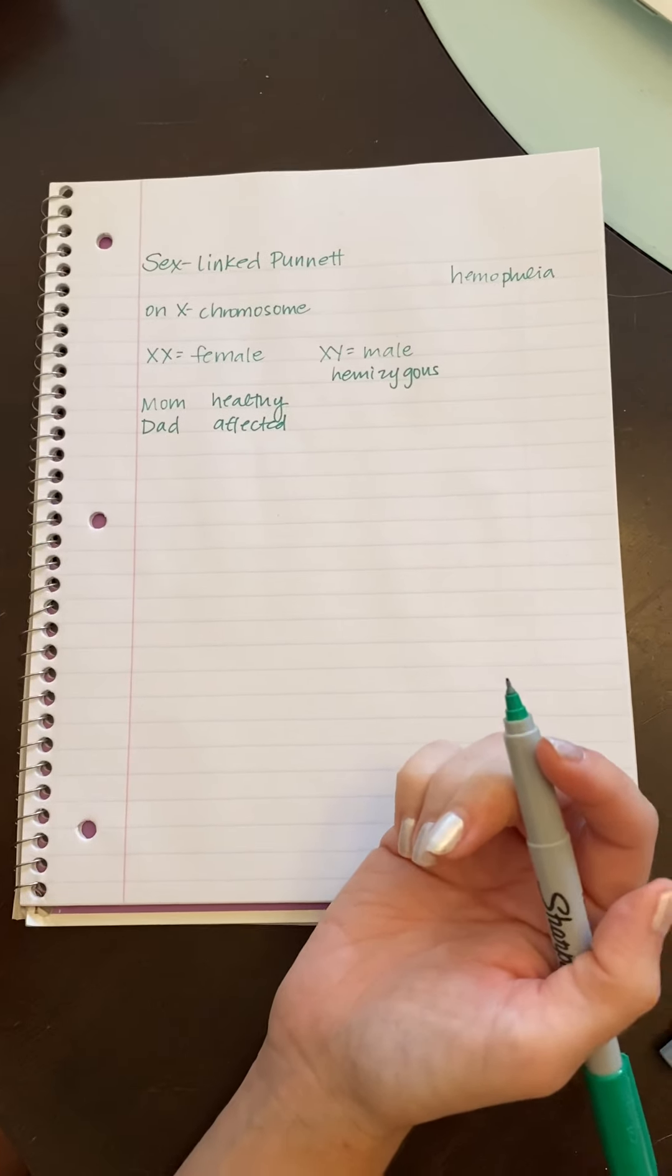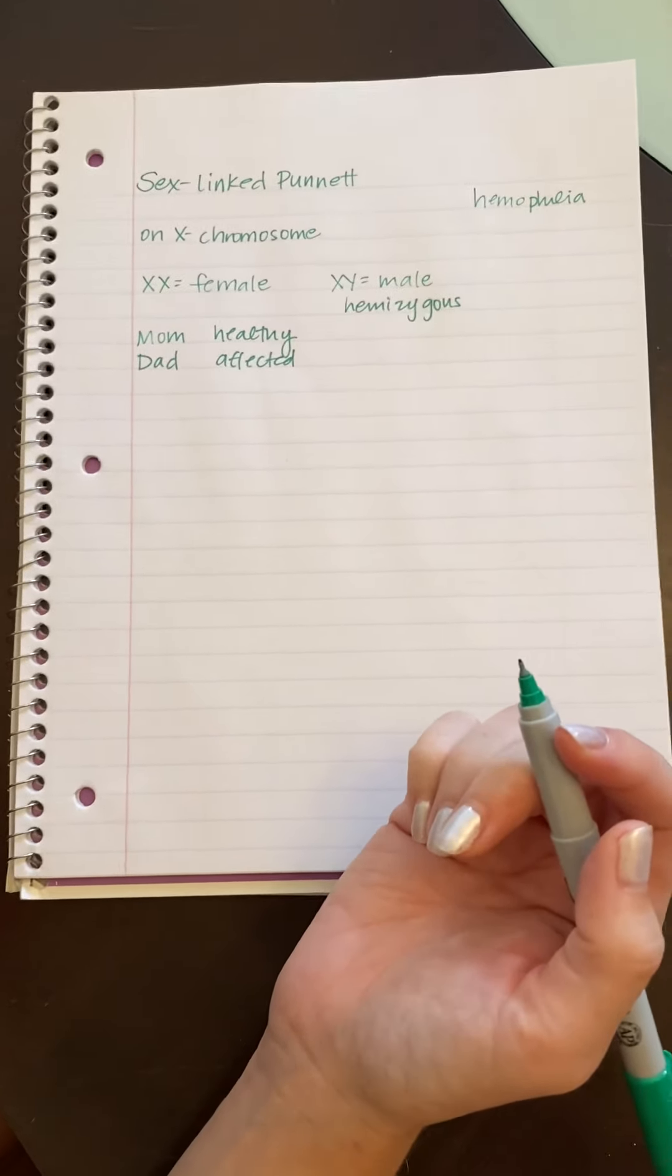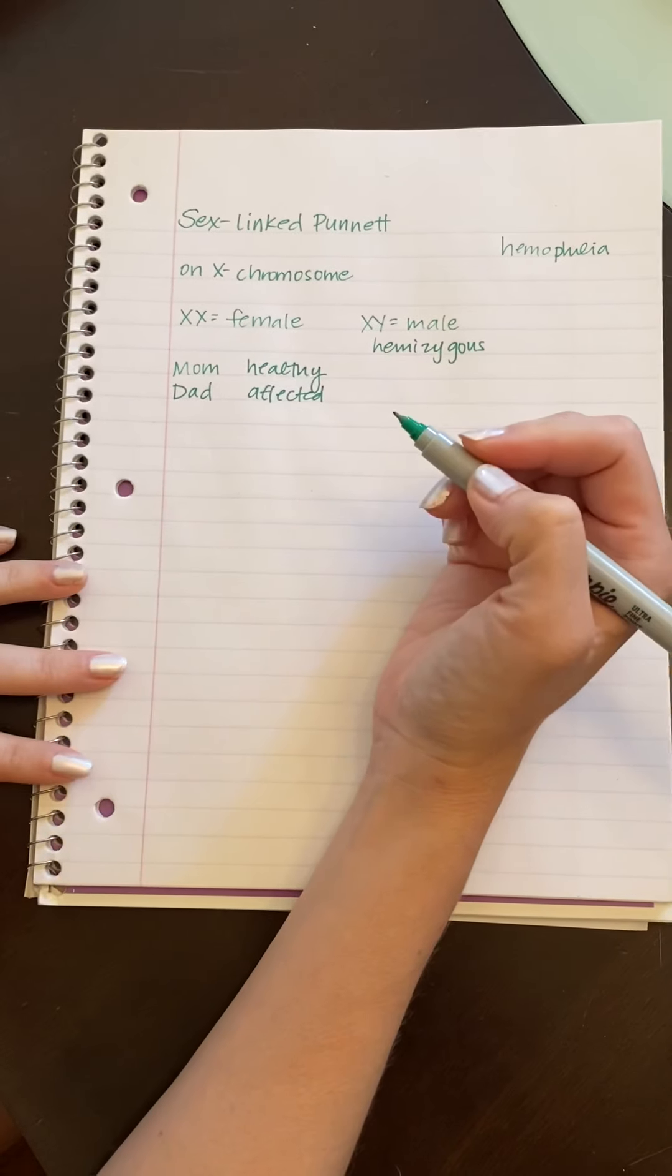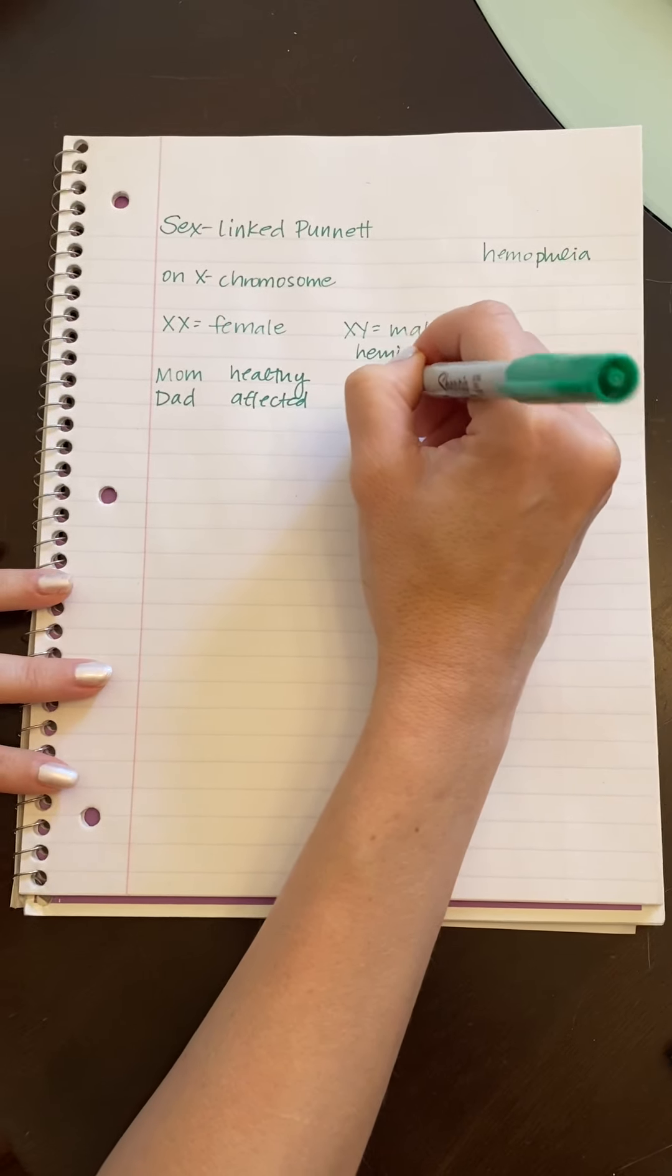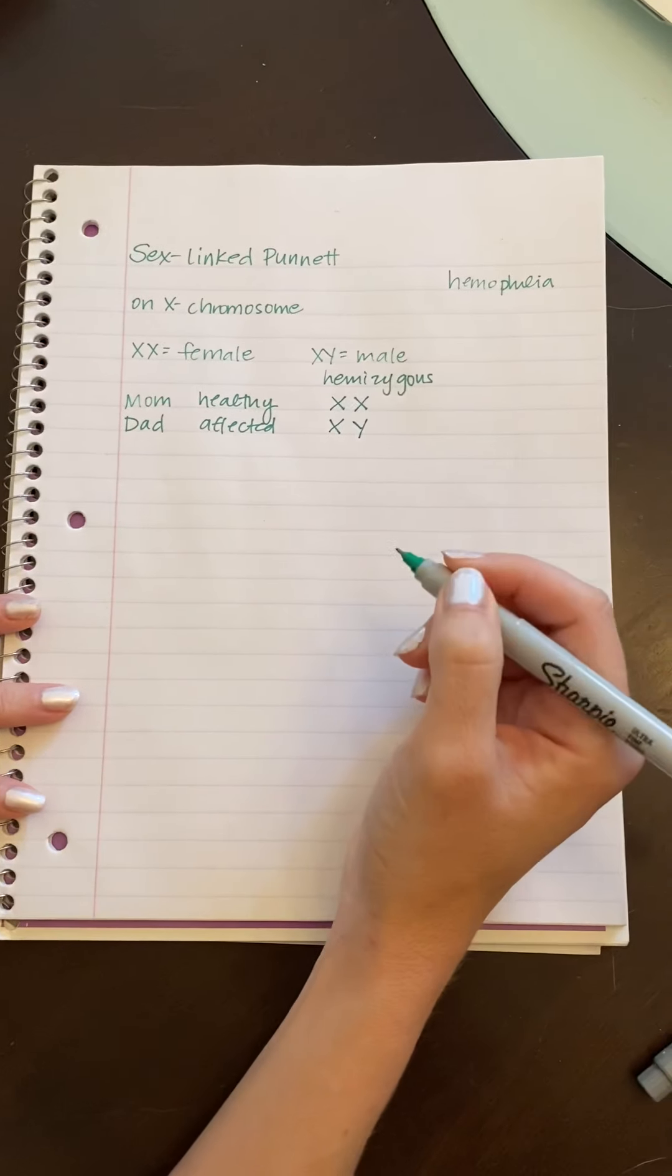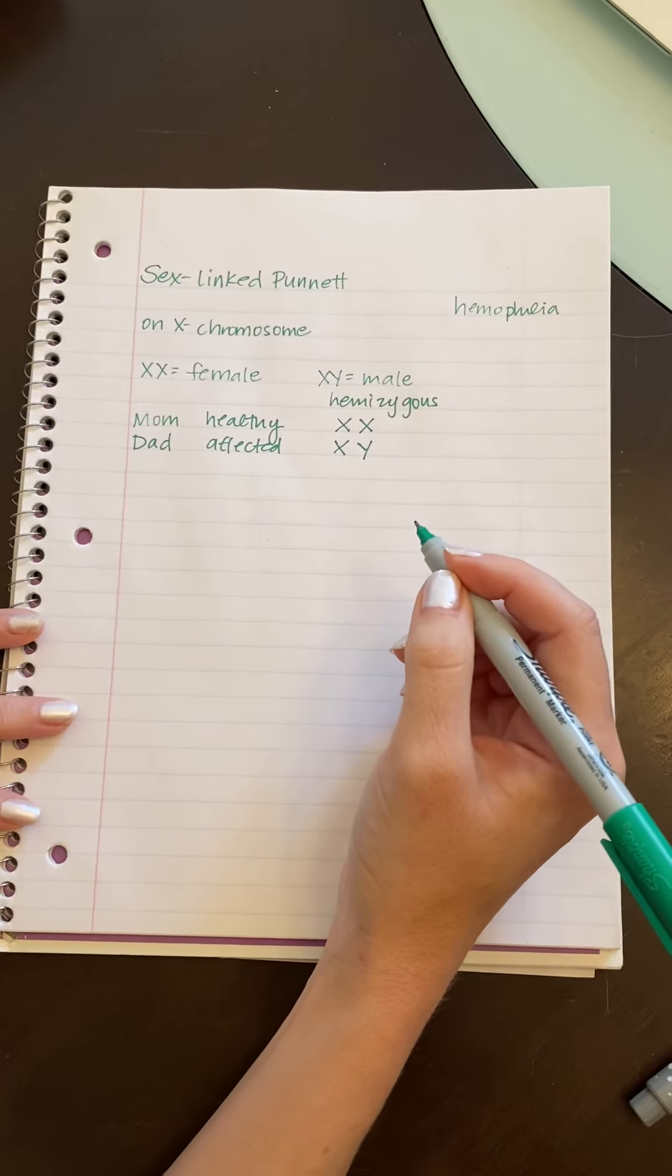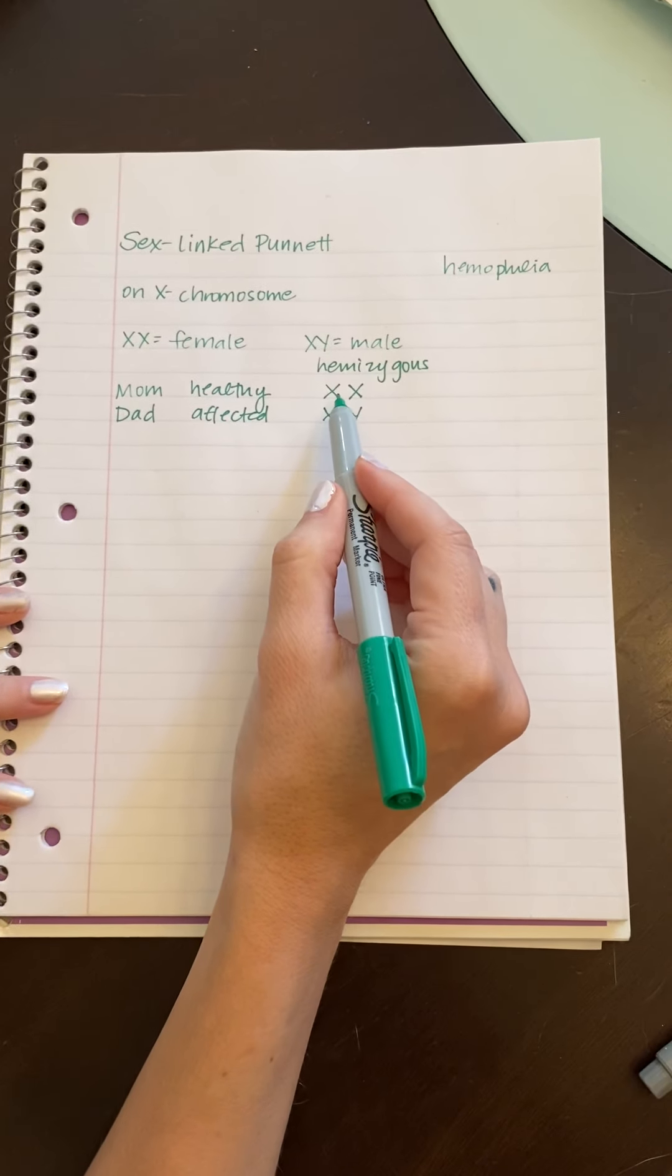So here's the extra step. The first thing that you have to do before you actually assign the allele letters is to make mom and dad male or female. So mom is two X's. Dad is an X and a Y. Then what you do is you figure out the alleles based on the phenotype and you add those only to the X.